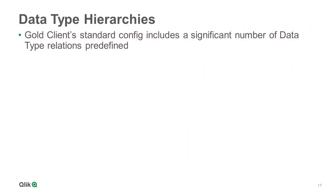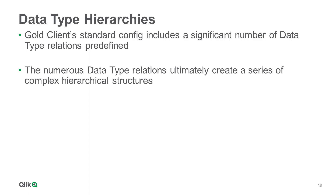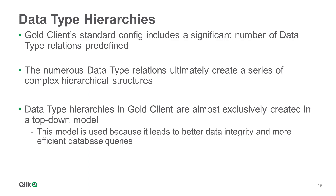It is worth noting that the Gold Client standard configuration is delivered with a significant number of data type relations predefined. The various data type relationships ultimately create a series of complex hierarchies, and it is important to understand that these hierarchies are constructed almost exclusively in a top-down model. Please be aware that the top-down model is used in the Gold Client configuration because it results in higher levels of data integrity and because the export performs more efficiently when querying the database.